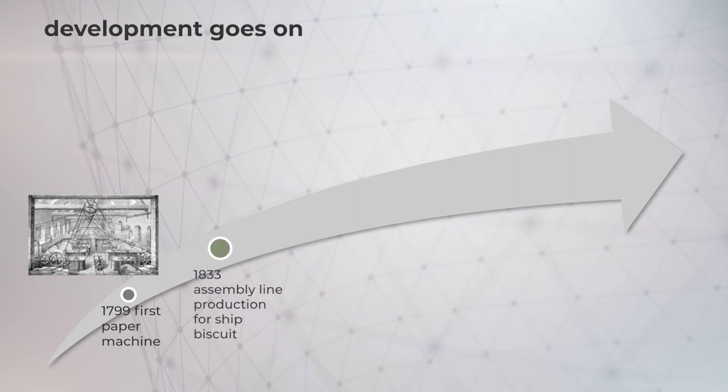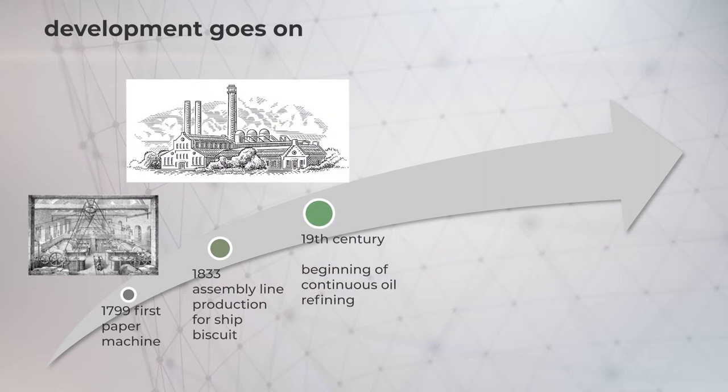The first assembly line production for ship's biscuit was opened in 1833. Nowadays, almost all packaged food is processed continuously, leading to the production of food in a fast and efficient way. In the 19th century, the first oil refinery was opened, which also allowed us to produce fuel for a large number of people.